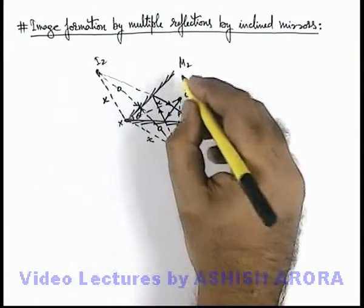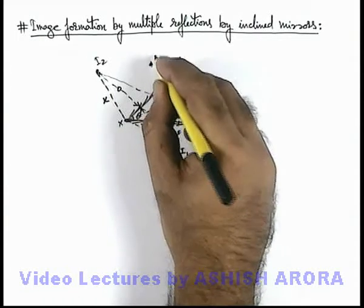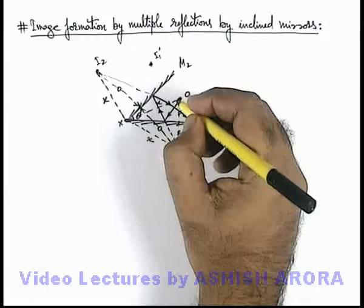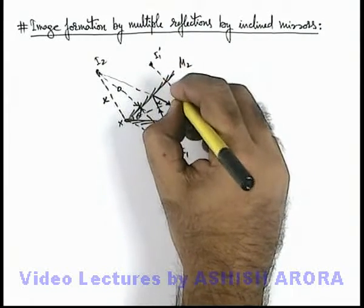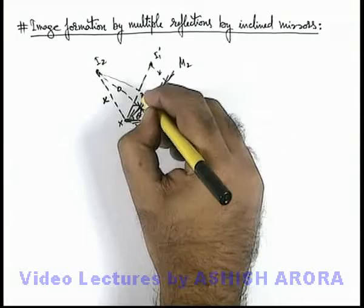Similarly, if light from one object directly falls on mirror M2, an image I1 prime will be obtained at the same distance behind the mirror, and this will also be located at a distance x.